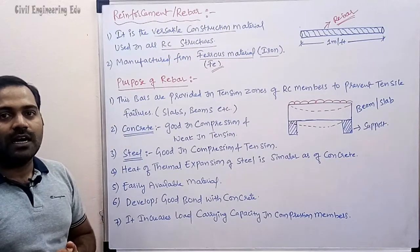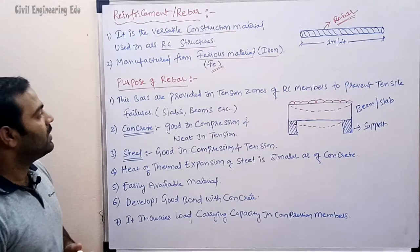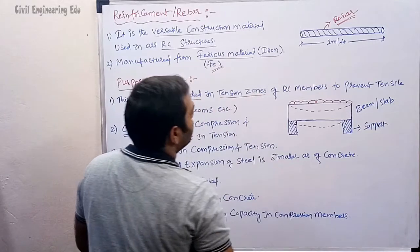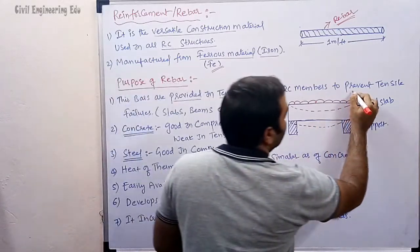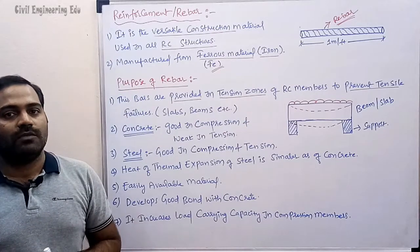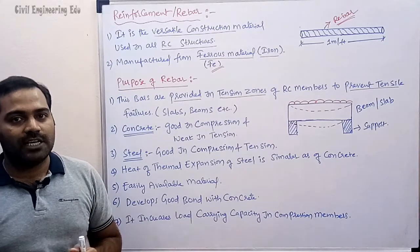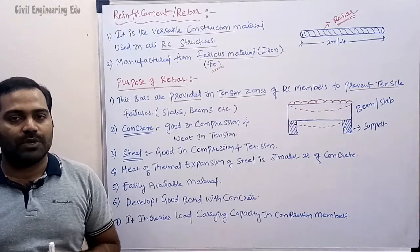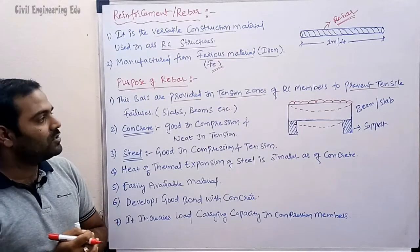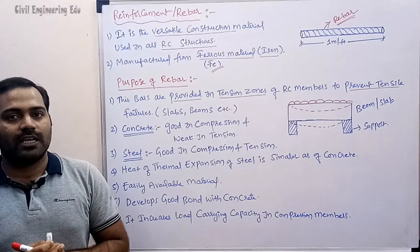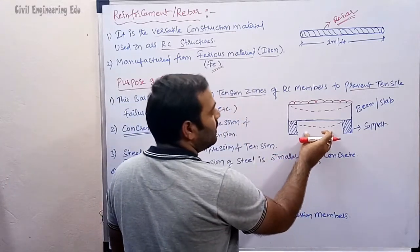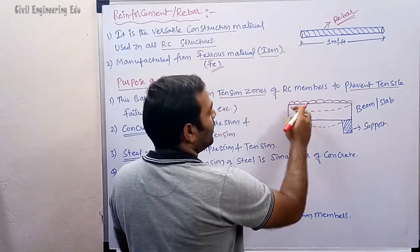Why do we provide rebars in RC structures? The reason for providing reinforcement is mainly to prevent tensile failures. Also, in compression members, it is used to decrease the size of a cross-section and to increase the load-carrying capacity of a particular member.